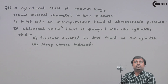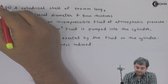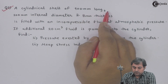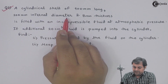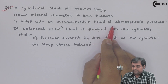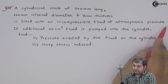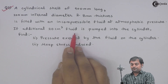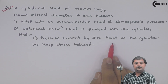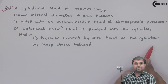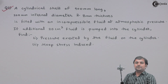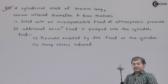Let us take the third question on thin cylinders. A cylindrical shell 900 mm long, 200 mm internal diameter, and 8 mm thickness is filled with an incompressible fluid at atmospheric pressure. If additional 20 cm³ fluid is pumped into the cylinder, find: (1) pressure exerted by the fluid on the cylinder, and (2) hoop stress induced.